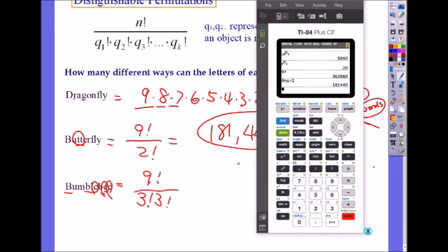So this time you do nine factorial divided by what's three factorial? Three times two times one. So this is six and this is also six. So can I just divide it by 36?